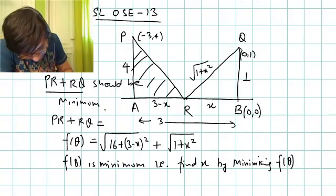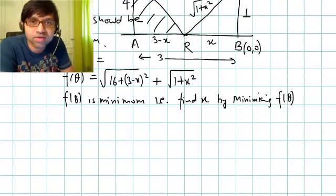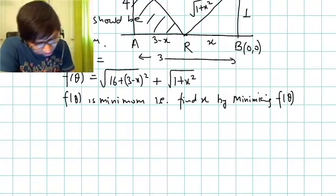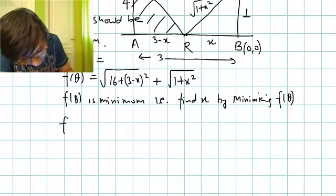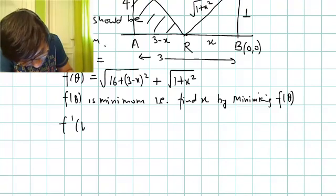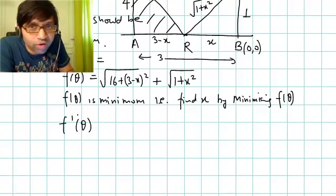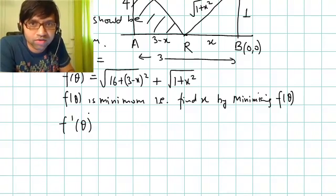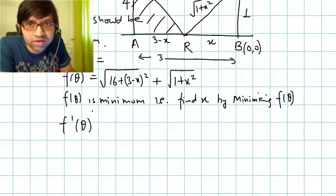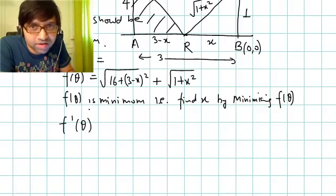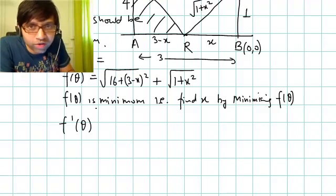Now how to find the minimum value of a function - that comes in calculus, under differential calculus. How we do that: we differentiate this. Why we are differentiating you might not be able to understand at this stage, but don't worry. Let me differentiate it and find the point where the derivative is zero. These are those points where the function will take the extreme values, and in this case the extreme value will be the minimum value. I am not going to explain this concept in detail. I am just giving you the result.